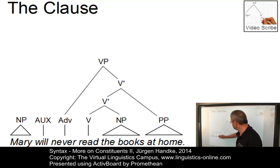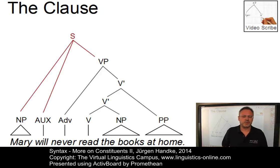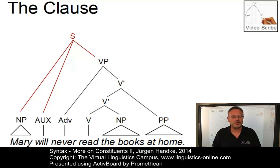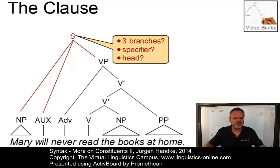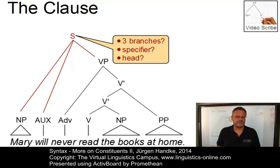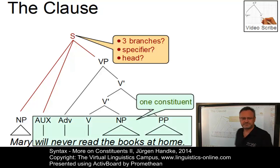But how do we combine the three constituents — noun phrase, auxiliary verb, and verb phrase — into a sentence? In the early days of generative grammar, a flat structure was used to represent these three categories: they were all daughters of a common mother node S, which stood for sentence. However, this analysis was shown to be inadequate for various reasons. First, such a constituent would violate the binary branching principles of X-bar syntax and the strict head-modifier organisation. More importantly, there are arguments suggesting that the auxiliary verb and the verb phrase have to be treated as one constituent — a constituent that is independent from the subject noun phrase, in this case Mary.